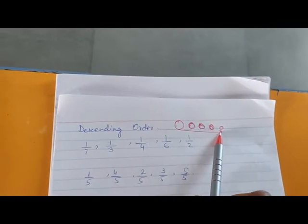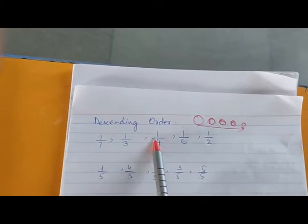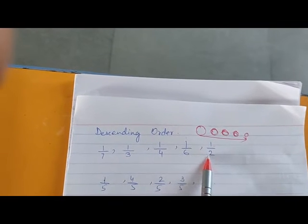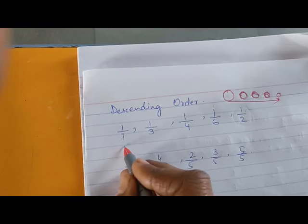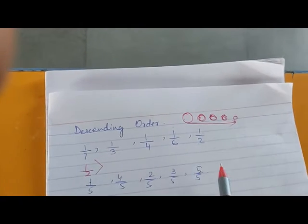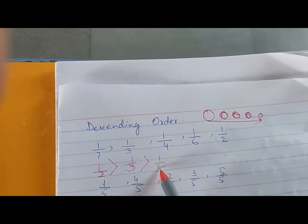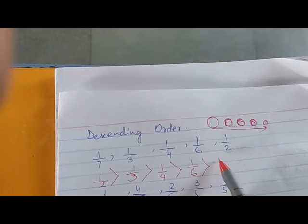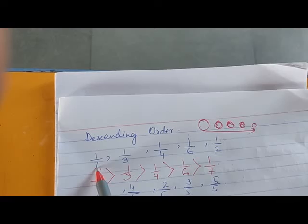Now coming to descending order. In descending order you have to arrange from the biggest number to the smallest. In the first question all the numerators are same, and when the numerator is same, the fraction with the smallest denominator is the largest. So 1 by 2 is the biggest. We arrange: 1 by 2, then 1 upon 3, after that 1 upon 4, then 1 upon 6, and last 1 upon 7.